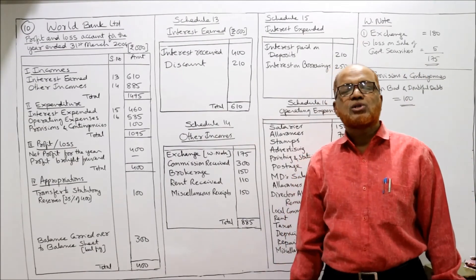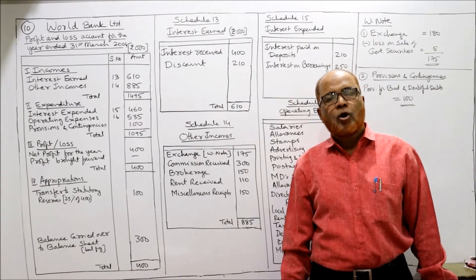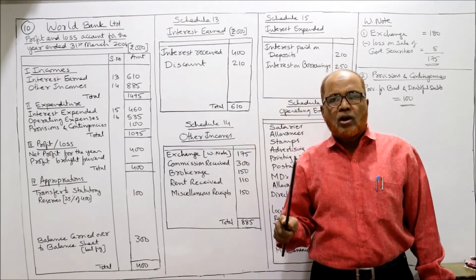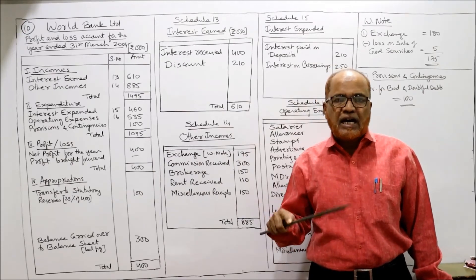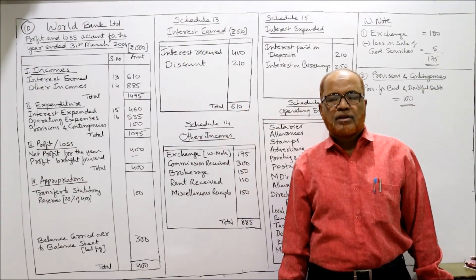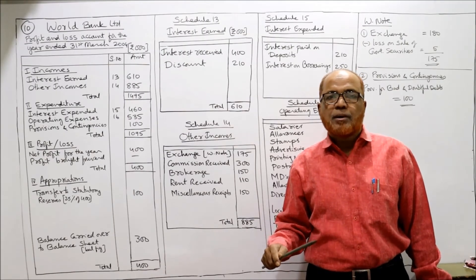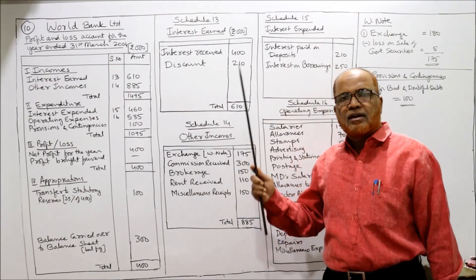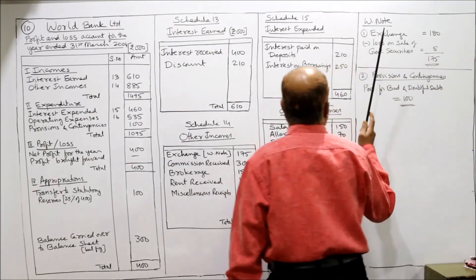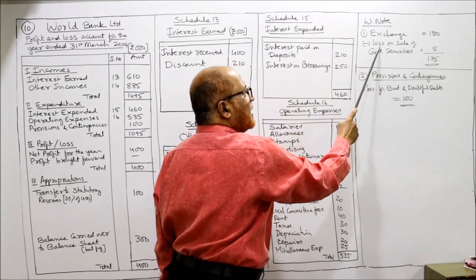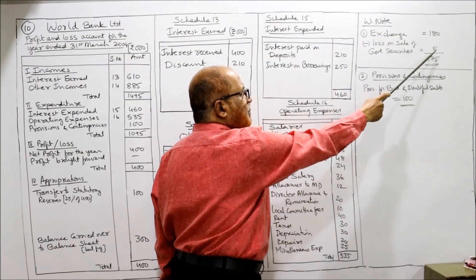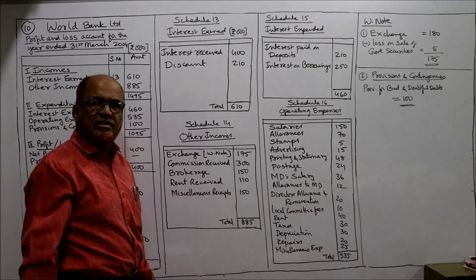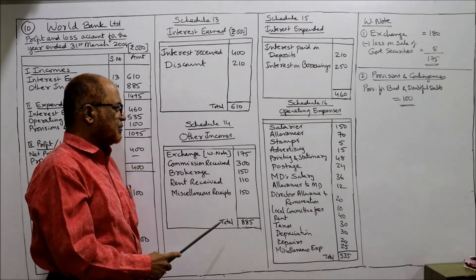Loss on sale of government security — this is a loss on sale of investment. Normally we deduct the loss from profit on sale of investment. But here there is no profit on sale of investment, so we deduct from another income. We deduct from exchange. In the working note: exchange 180 minus loss on sale of security 5 = 175. So I have taken 175 for exchange. We could also have deducted from brokerage or commission.